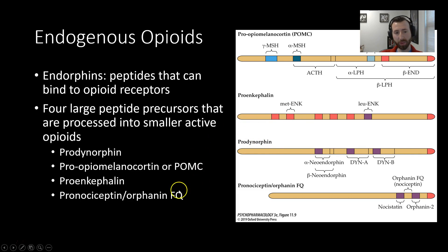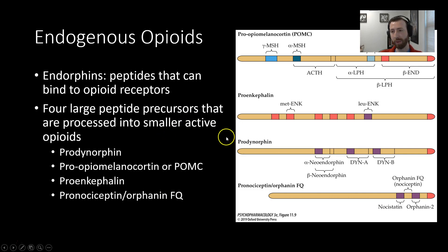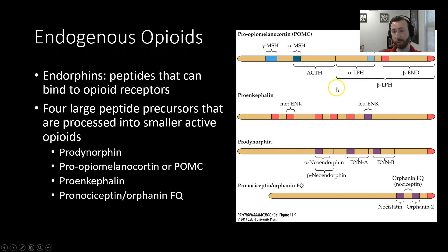Basically, we have these four large peptide precursors that contain a number of different peptides that can be broken apart and used to signal. Note that not all of the peptides contained within these large peptides are endogenous opioids. For example, we have ACTH here, which we're going to come back and talk about later on.